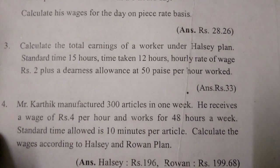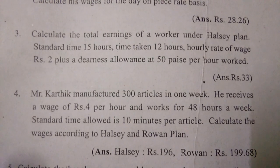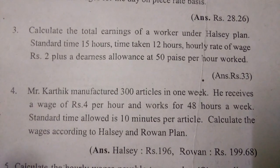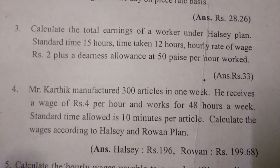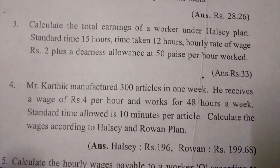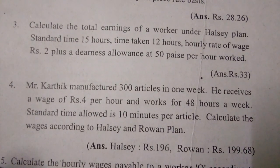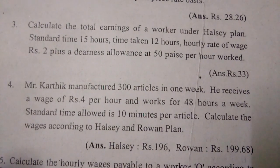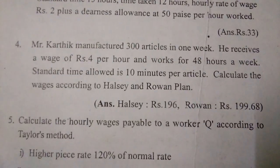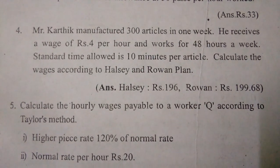Ramu produces 314 units in a six-hour day. Calculate his wages for the day on piece rate basis — that is 28 rupees 26 paisa. Third one: calculate the total earnings of a worker under the Halsey plan. Standard time: 15 hours, time taken: 12 hours, hourly rate of wage: 10 rupees plus allowance 11 rupees 50 paisa per hour worker — that equals 33 rupees.